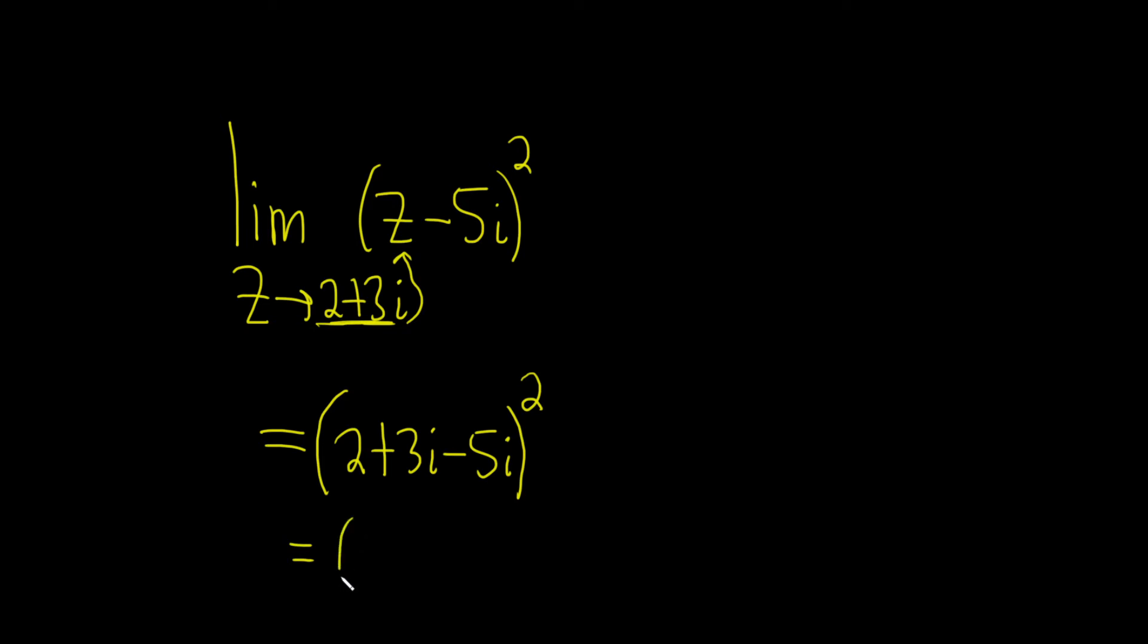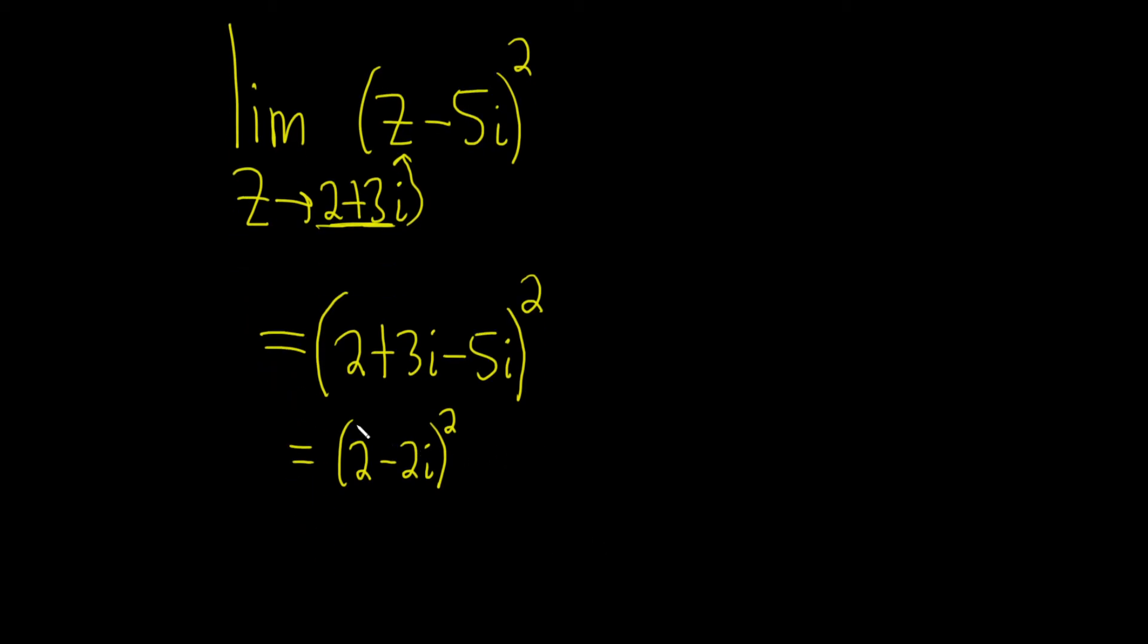So this is 2 and then 3i minus 5i is minus 2i, and this whole thing here is squared. Let's go ahead and multiply this out. Let's just write it twice and distribute. So this is 2 minus 2i times 2 minus 2i.